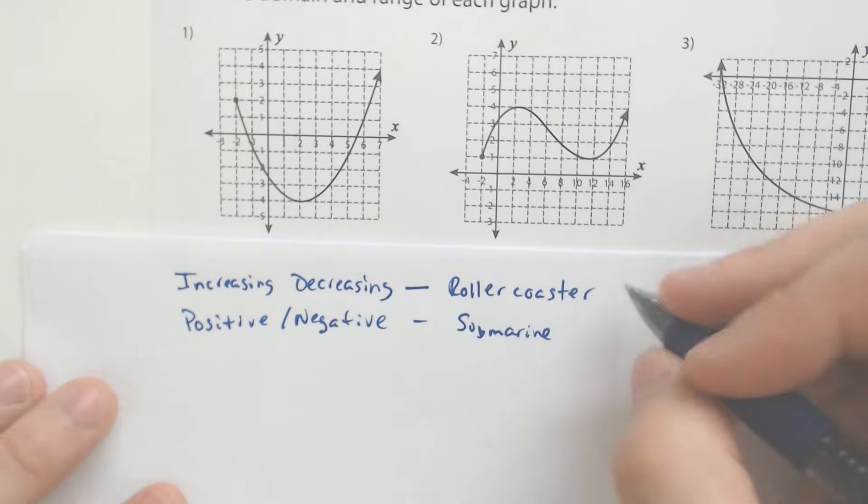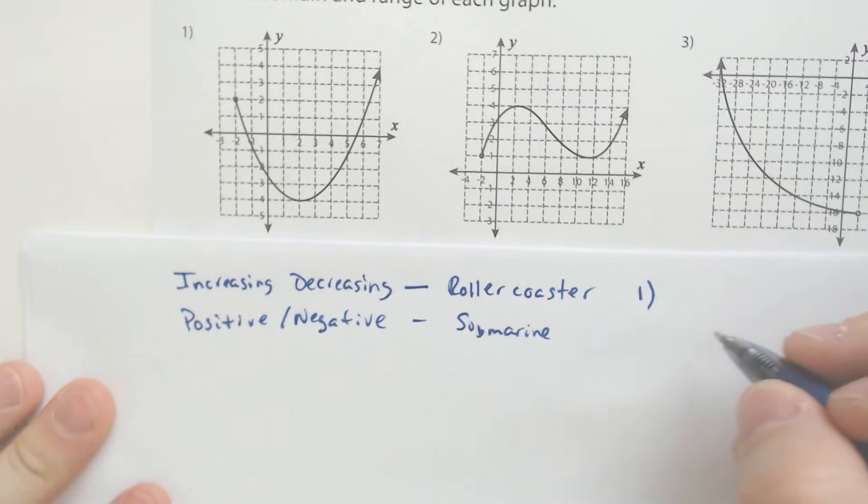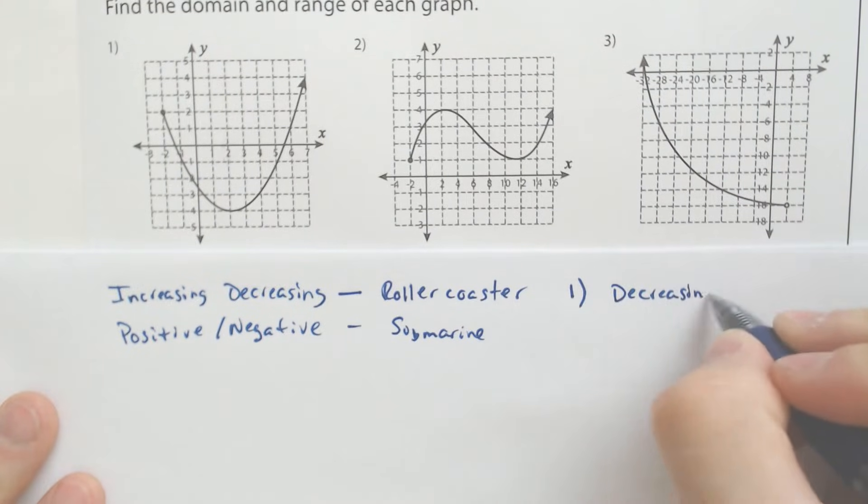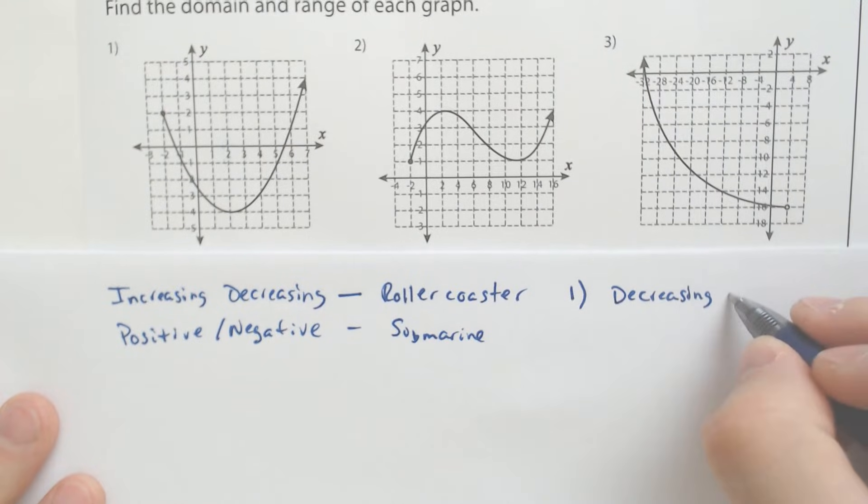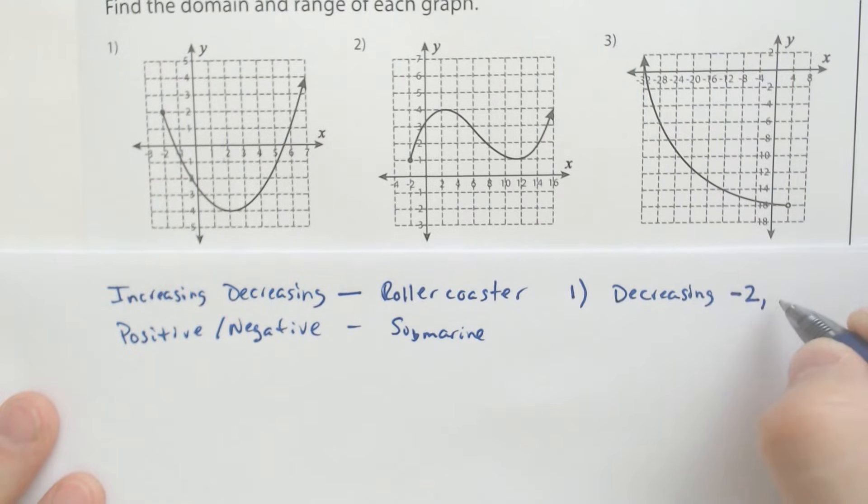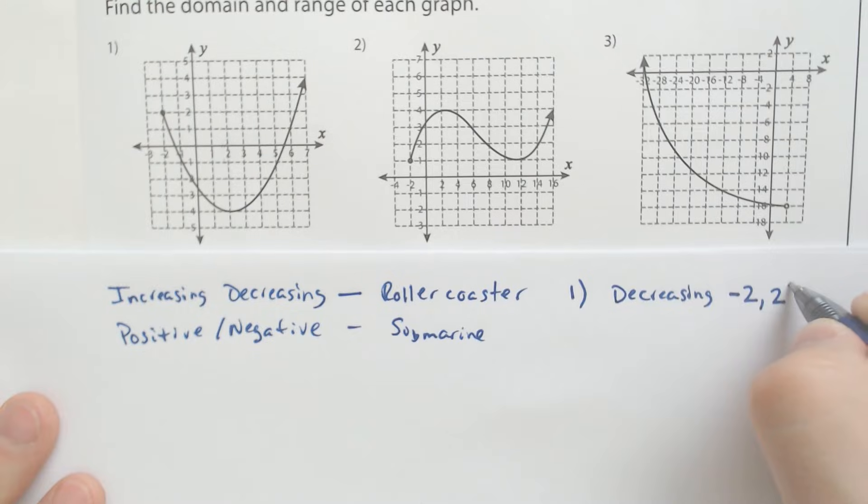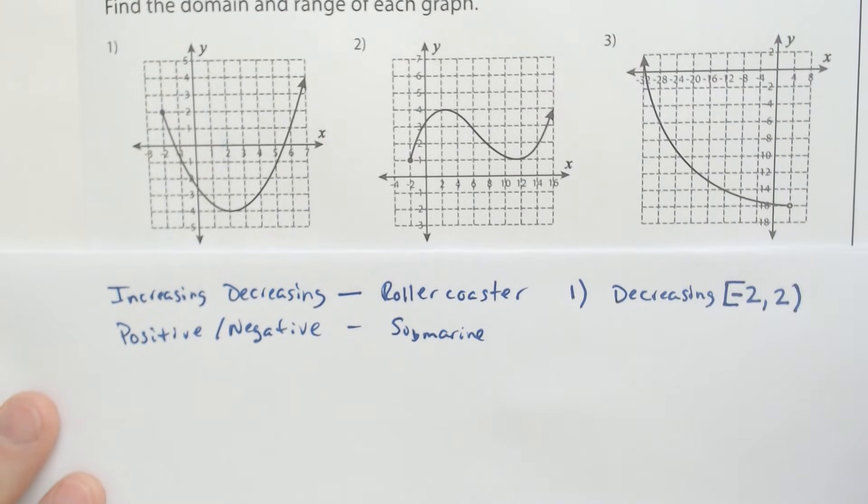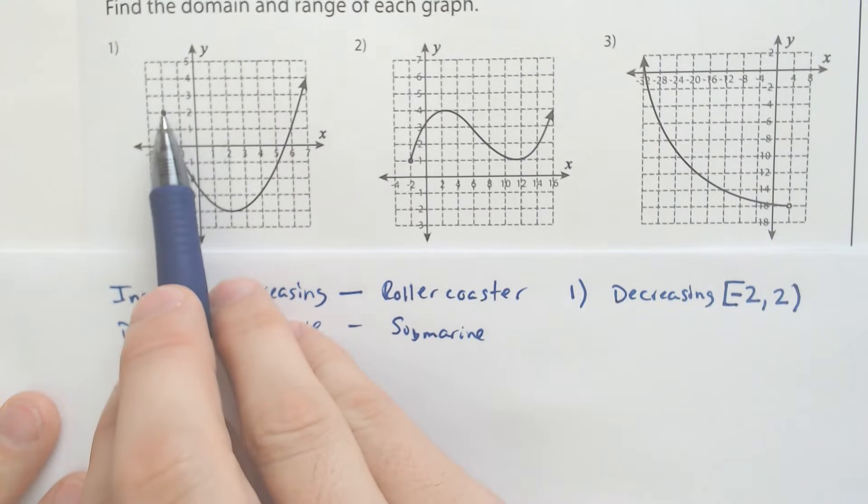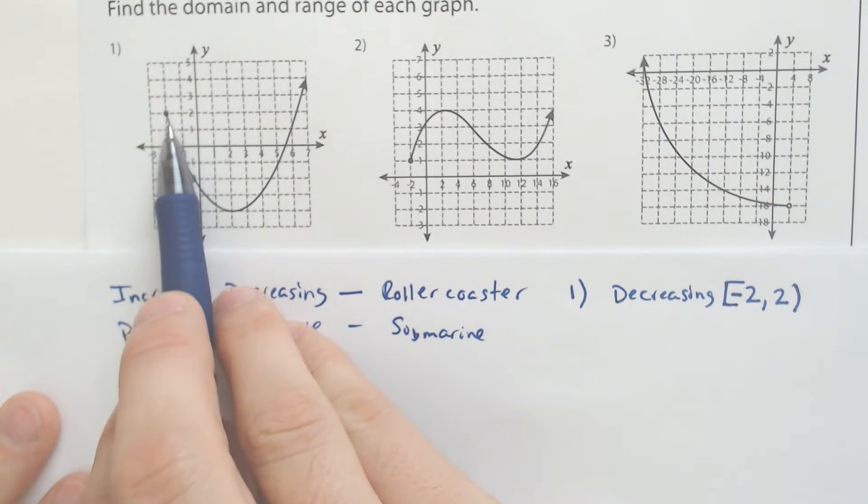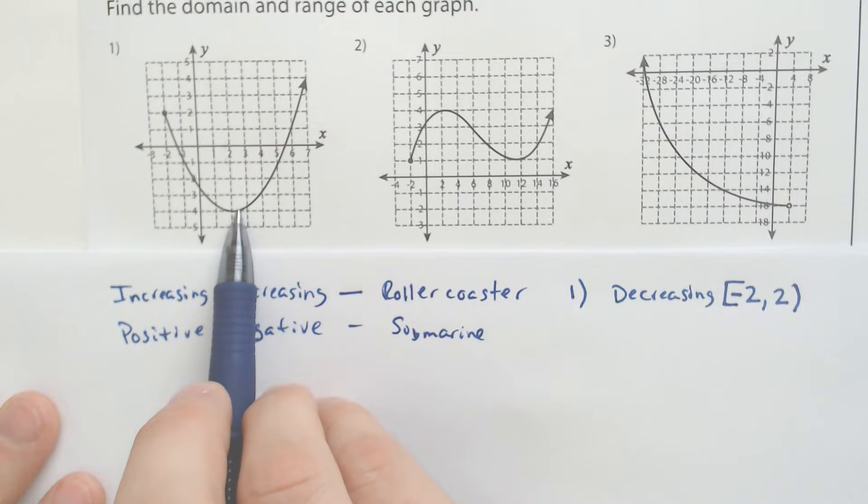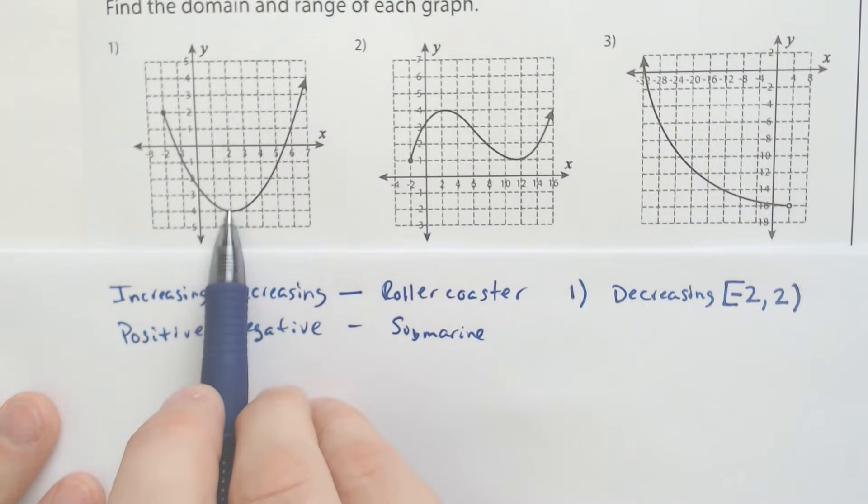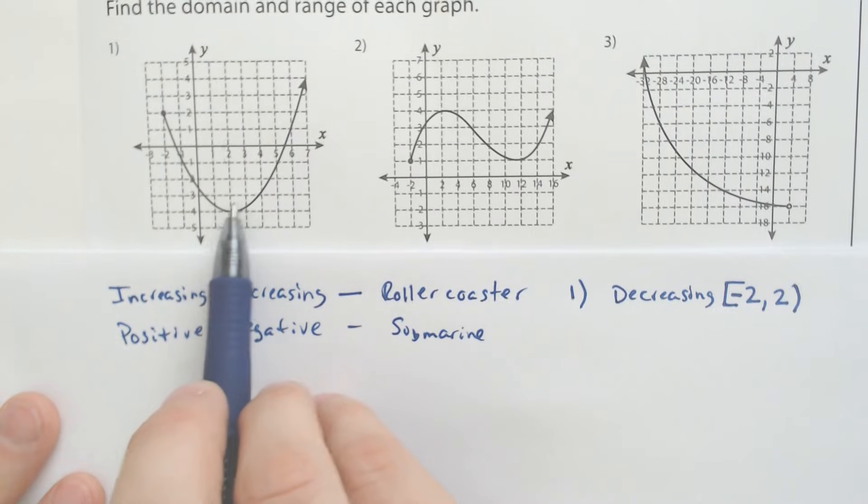So for this one, for number one, it is decreasing from negative two to positive two, parentheses and probably a bracket around the negative two because it was filled in. And I'm saying from negative two seconds up until two seconds. So you can think of it as in time.